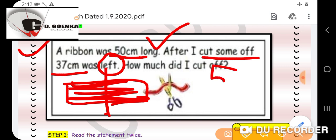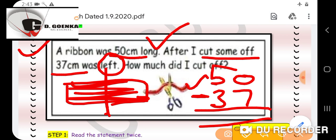So the total length of the ribbon is 50 and 37 was left. I have to find out how much is cut by me. So I will assign the subtraction sign. I will start my subtraction from the ones place. Here I am having zero at ones place and seven here. So I will borrow 10 and this five becomes four. So 10 minus 7 is 3 and 4 minus 3 is 1. So 13 centimeters of the ribbon was cut by me.